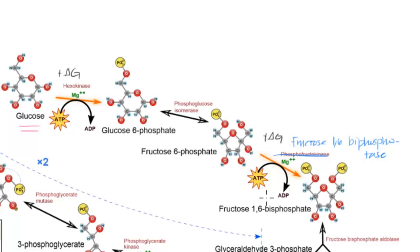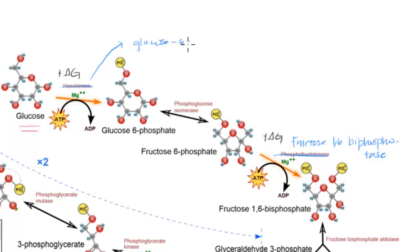Now that we've gotten past the second roadblock, we continue until we hit our final roadblock: going from glucose 6-phosphate to glucose. Normally, hexokinase converts glucose to glucose 6-phosphate. But here the body uses a different enzyme — glucose 6-phosphatase — which removes the phosphate group from glucose 6-phosphate to form glucose.